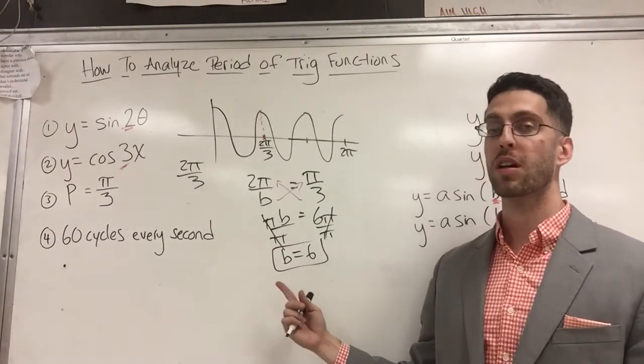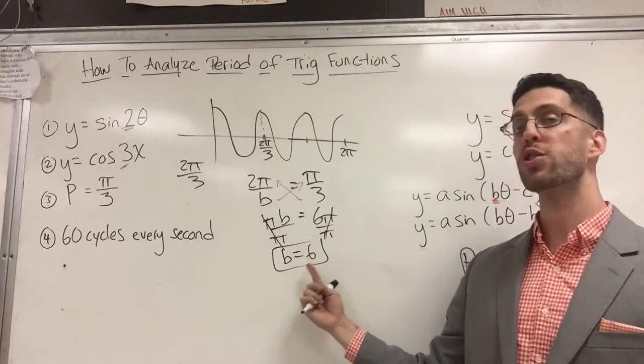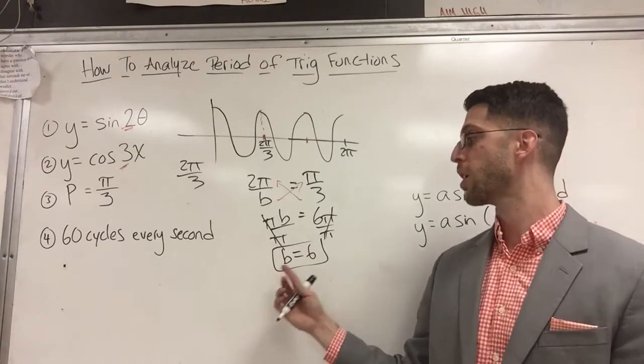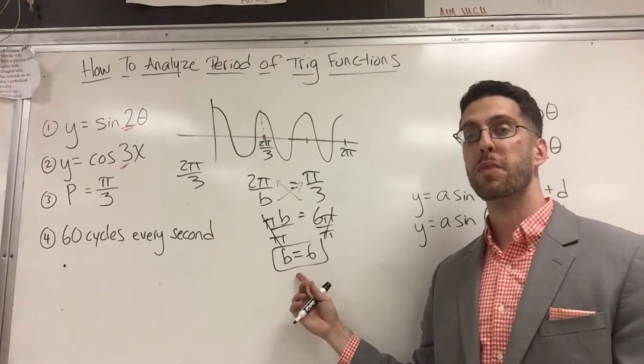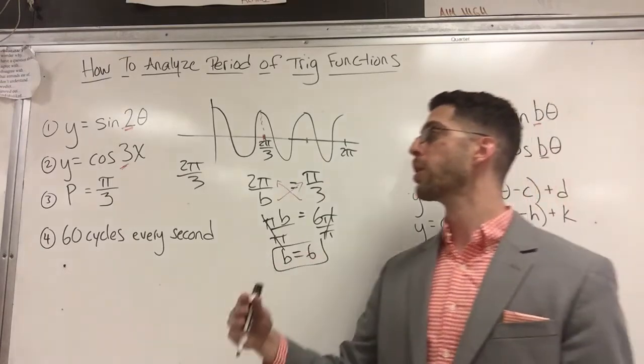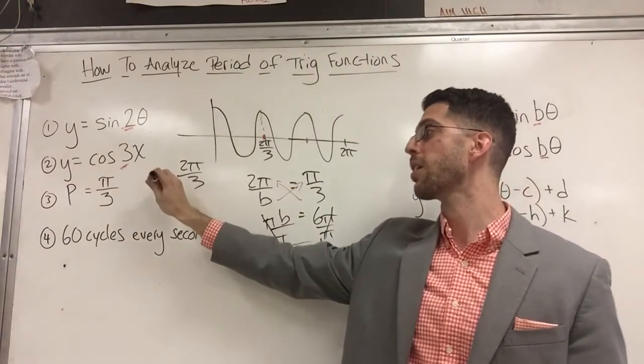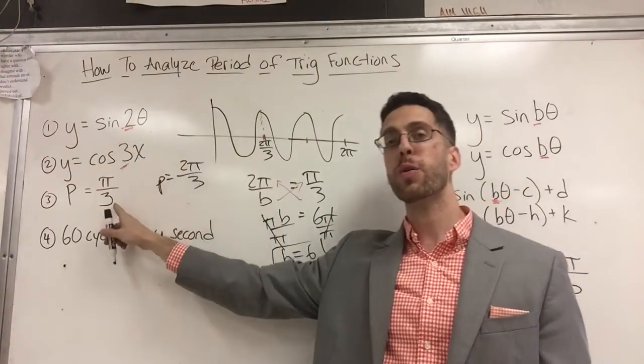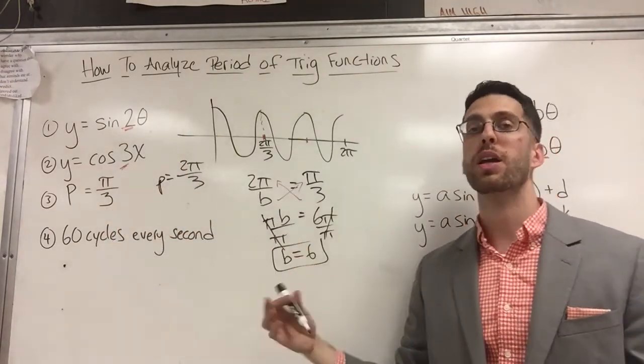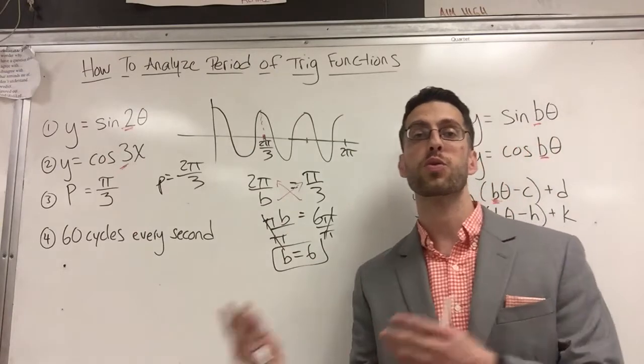That means I can fit six curves in a two pi distance. The equation would be either y equals sine six x or cosine six x. So my point is, if you know the frequency you can easily find the period. If you know the period you just do one extra step and now you know the frequency.